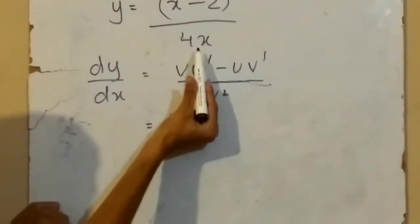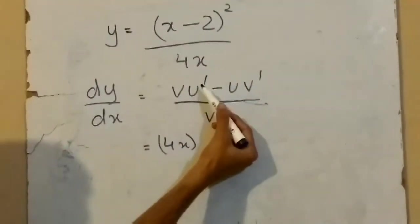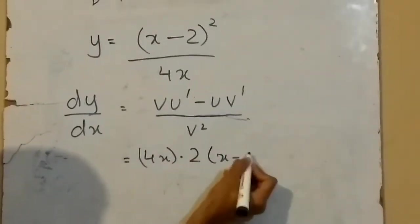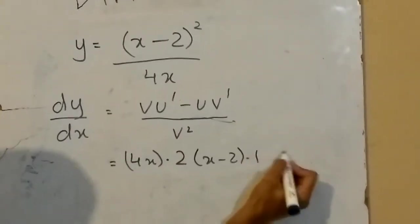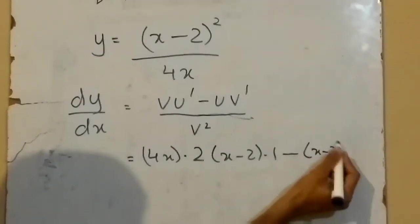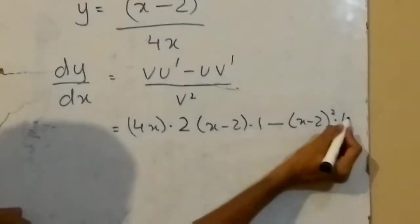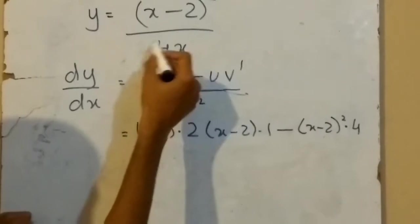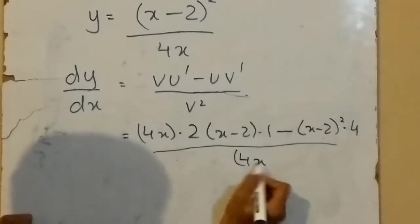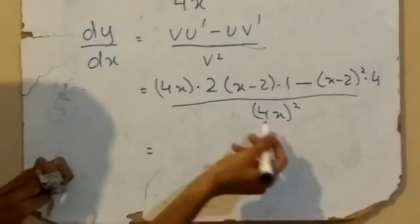Using this formula: v would be 4x and u would be (x minus 2). u′ means we differentiate u, so it would be 2·(x minus 2)·1. Then minus u·v′: u is written as (x minus 2) and we differentiate v which is 4x, so v′ is 4. The v² in the denominator means the second term 4x is squared.